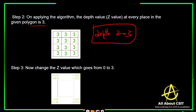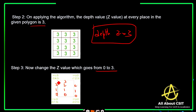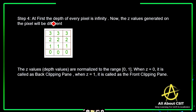After tilting the object slightly, the new depth values change: Z goes from 0 to 3. The Z values across pixels become 0, 1, 2, 3 in sequence. The depth values are normalized to the range [0, 1]. When Z equals 0, it is called the back clipping plane, and when Z equals 1, it is called the front clipping plane.